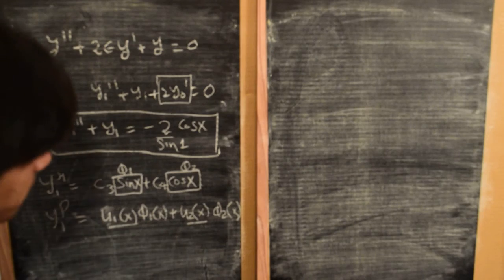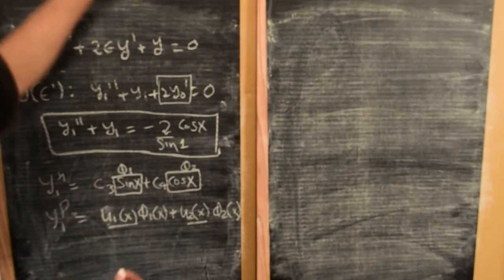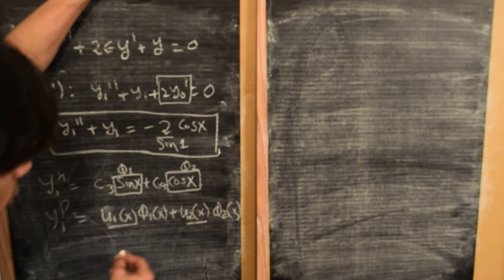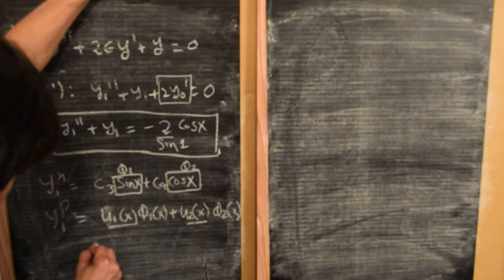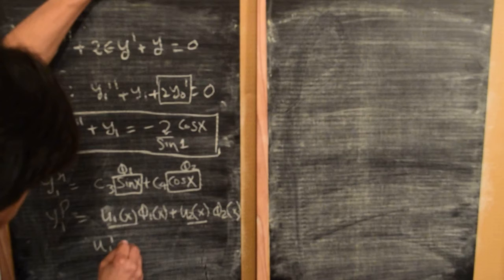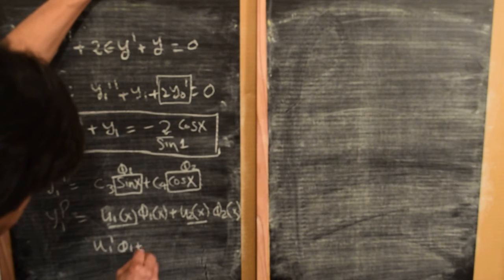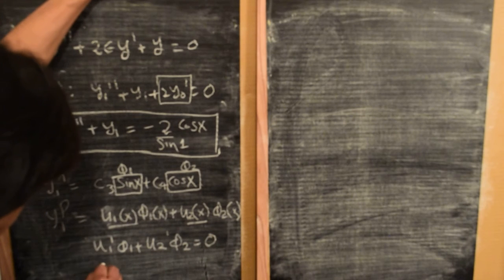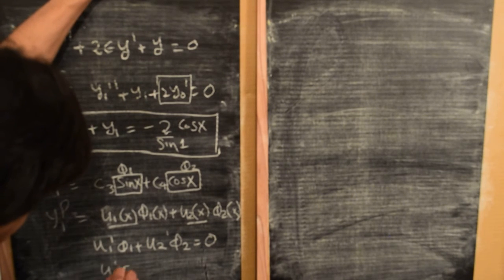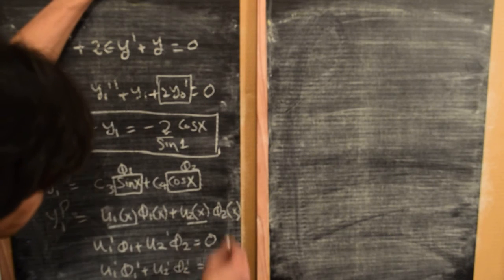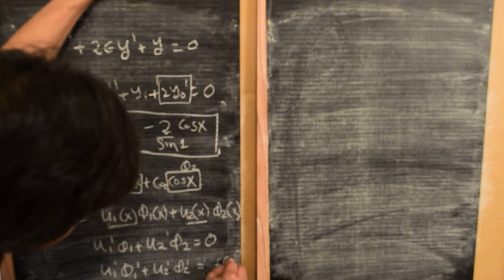According to this method, u₁ and u₂ are solved by satisfying two equations: u₁'·φ₁ + u₂'·φ₂ = 0, and u₁'·φ₁' + u₂'·φ₂' = f(x), where f(x) is the forcing term.